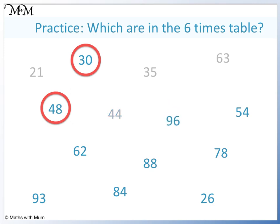96 is even. 9 plus 6 equals 15, which is a multiple of 3, so 96 is a multiple of 6. 54 is even. 5 plus 4 equals 9, which is a multiple of 3, so 54 is a multiple of 6. 62 is even, but 6 plus 2 equals 8, which is not a multiple of 3, therefore 62 is not a multiple of 6.